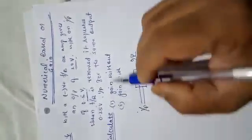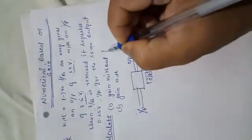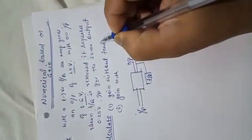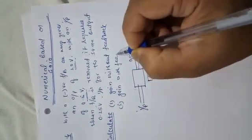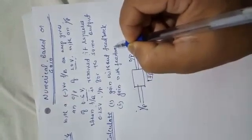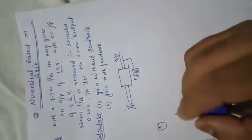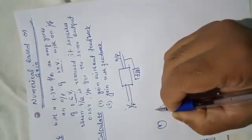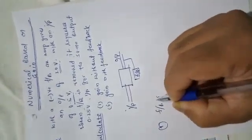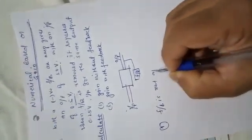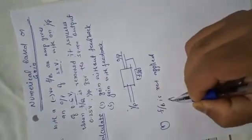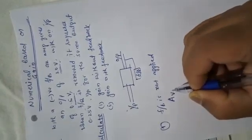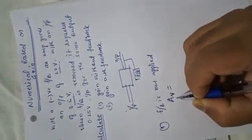We have to find gain without feedback and gain with feedback. In the first situation, let us see when feedback is not applied. When feedback is not applied, the gain is denoted as Av, not AvF.